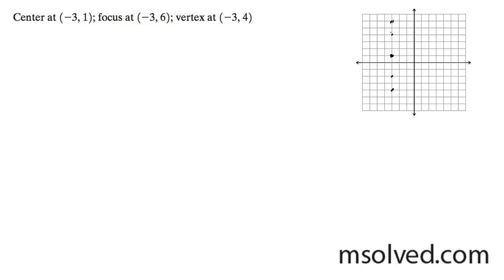And then we have the focus at negative 3, 6, or one of the focuses. Then we have a vertex at negative 3, 4, so we just draw the other ones here.